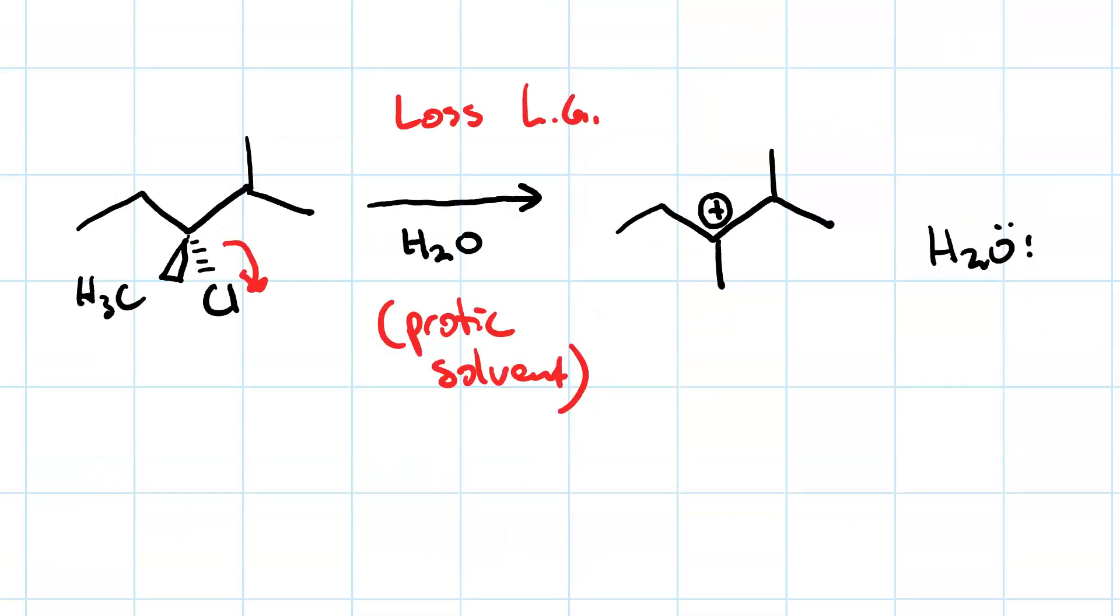On the other hand, water can act as a base and will always take the more substituted beta proton to make the Zaitsev product. The only stereospecificity is that you'll get the isomer that has less steric interference.